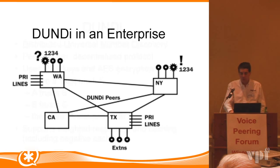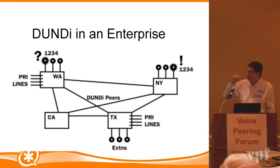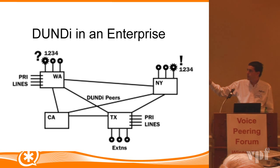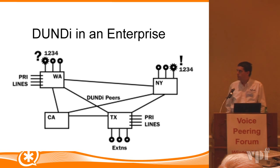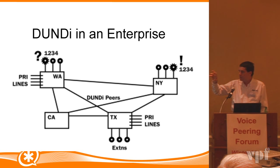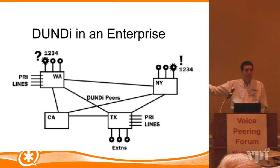Here's an example with a small diagram. An enterprise has Asterisk servers at four locations. Someone at the top-left picks up the phone and dials 1234. The local server says that extension isn't here, so it sends a query out into the network asking if anyone can service it. The server in New York says yes, and the call gets routed. Importantly, if the administrator moves that extension to the Texas office, a split second later that's where calls start going — no one has to change anything on any other server.